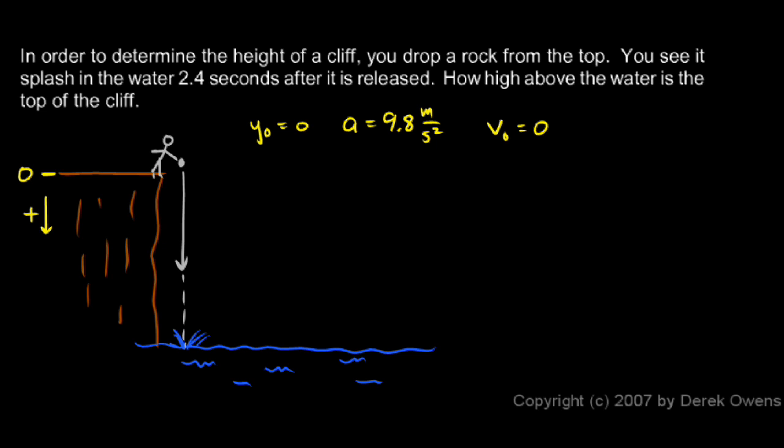And I want to know how high the cliff is so I can just use this equation. y is y₀ plus v₀t plus ½at². And the initial position is 0 so the first term goes to 0. And the initial velocity is 0 so the second term goes to 0. So my equation is just y equals ½at².